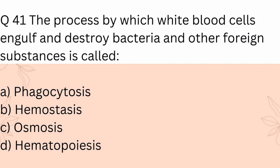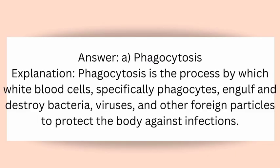Question 41: The process by which white blood cells engulf and destroy bacteria and other foreign substances is called? A) Phagocytosis, B) Hemostasis, C) Osmosis, D) Hematopoiesis. Answer: A) Phagocytosis. Explanation: Phagocytosis is the process by which white blood cells, specifically phagocytes, engulf and destroy bacteria, viruses, and other foreign particles to protect the body against infections.